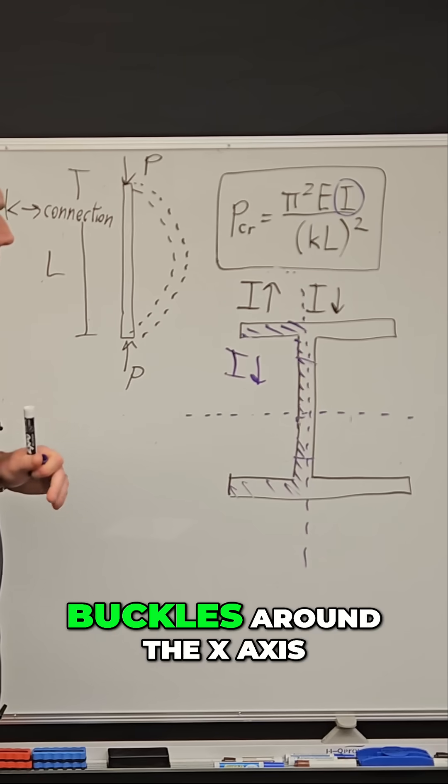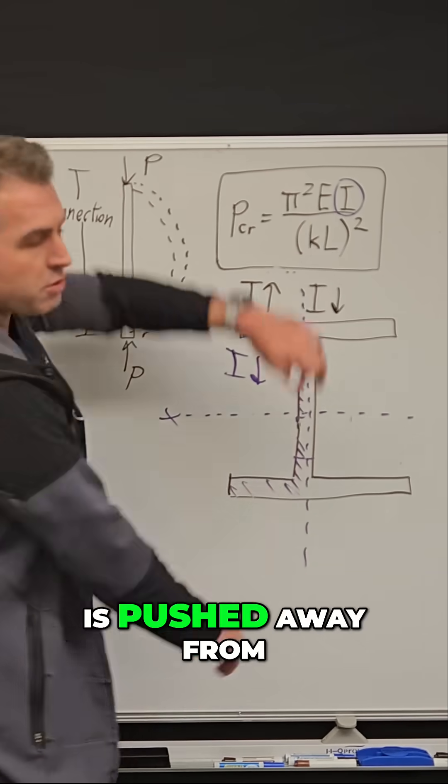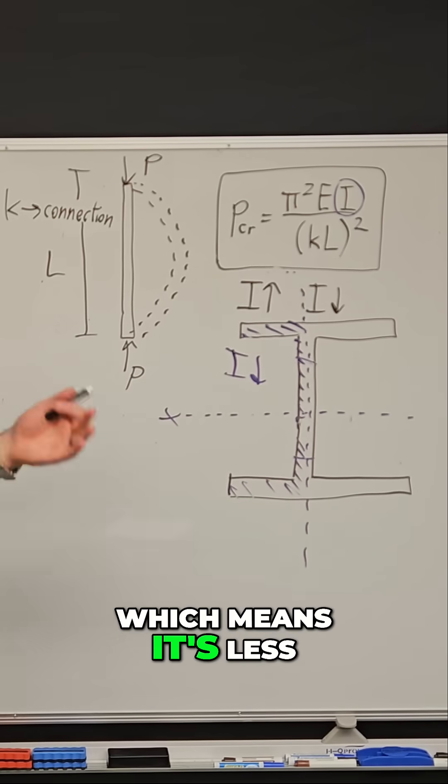And if the column buckles around the X-axis, this other axis, more of that area is pushed away from that axis, which means it's less likely to buckle.